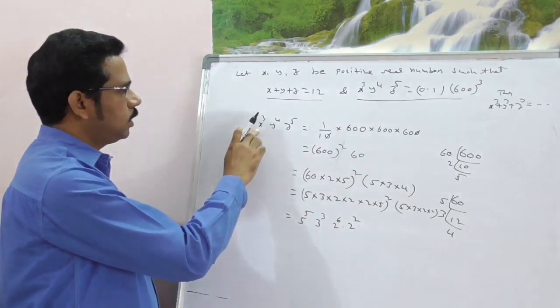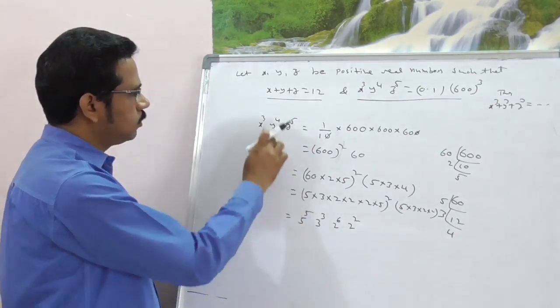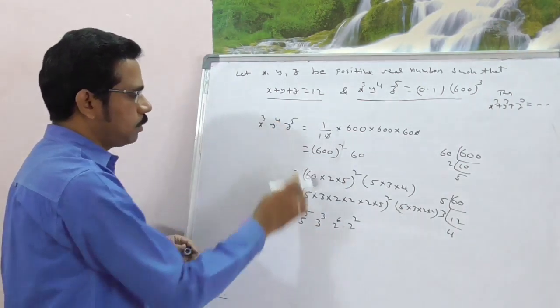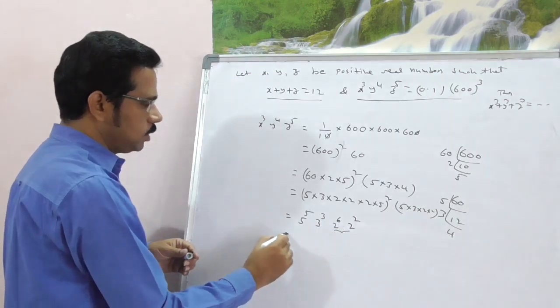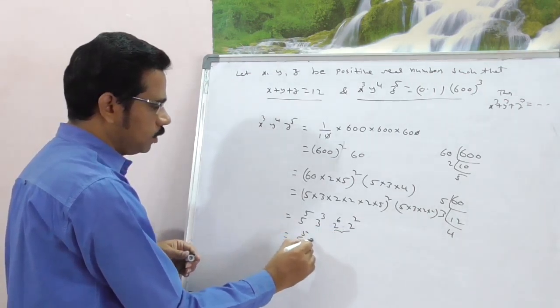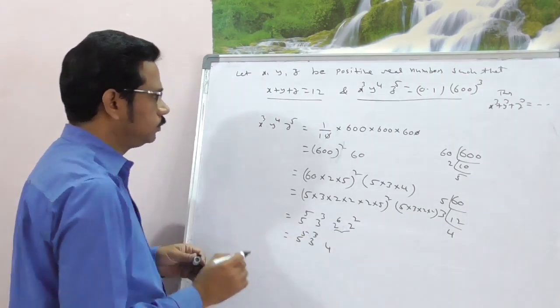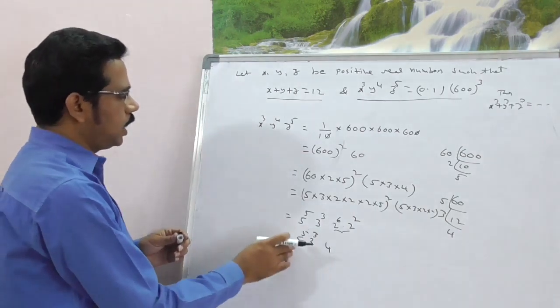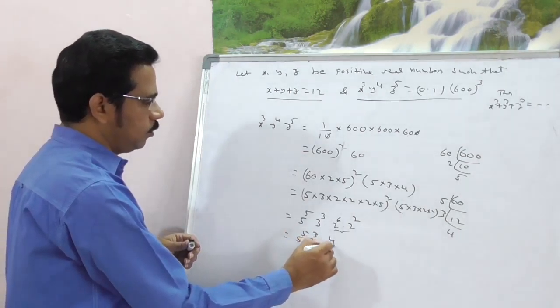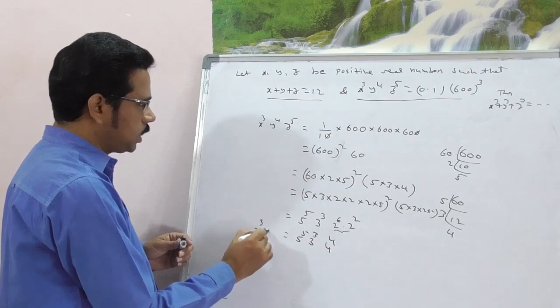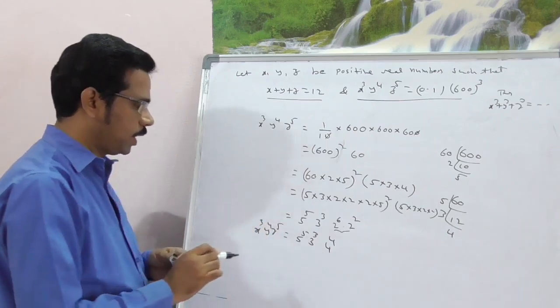Just observe here, x cube, we got this y power 4, okay, z power 5. Now convert this into 5 power 5, 3 cube in terms of 4, right? So already, this value, this is nothing but 4 power 4. Compare with x cube, y power 4, z power 5.